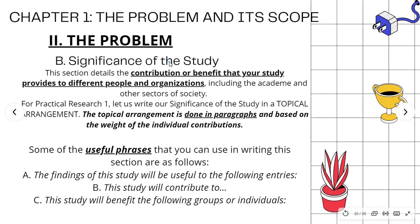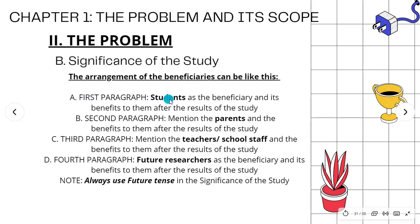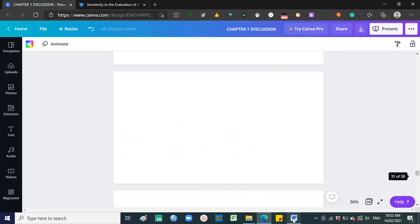Letter B of The Problem section is the Significance of the Study. This section details the contribution or benefit that your study provides to different people and organizations, including the academe and other sectors of society. Write the Significance of the Study in a topical arrangement — done in paragraphs based on the weight of individual contributions. Since the respondents are students, students are the main beneficiaries first, then parents, teachers, school staff, and future researchers. Always use future tense in the Significance of the Study.